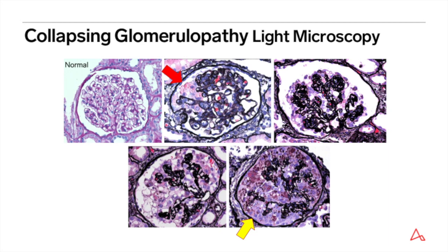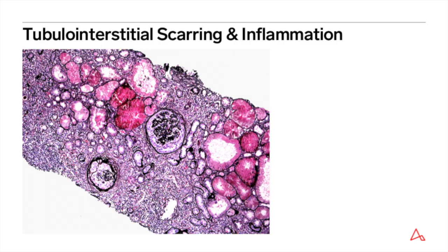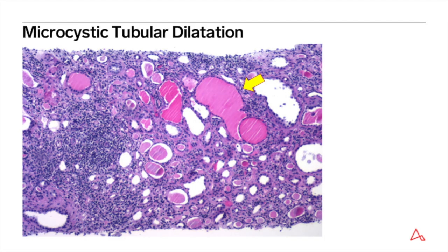Pseudocrescents are designated as such based on the belief that they are derived from podocytes, in contrast to true crescents, which form from parietal epithelial cells lining Bowman's capsule. Tubulo-interstitial involvement in CG is variable, but most cases show tubulo-interstitial disease, usually manifesting as interstitial scarring, tubular atrophy, and chronic interstitial inflammation. Microcystic tubular dilatation is another hallmark of CG, but is not necessary for the diagnosis. It's characterized by focally ectatic tubules lined by markedly attenuated epithelial cells with accumulation of abundant PAS-positive cast material.